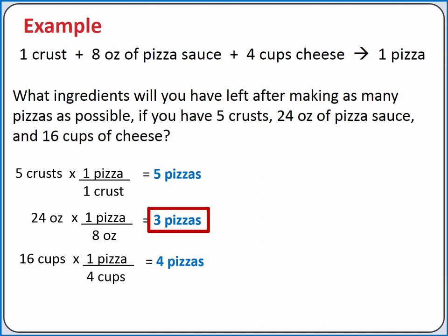So we can calculate how much of our excess reagents are required to produce 3 pizzas. We'll need 3 crusts to produce 3 pizzas. We started with 5 crusts, and we'll use 3 crusts to produce those 3 pizzas, so we should have 2 crusts left over.